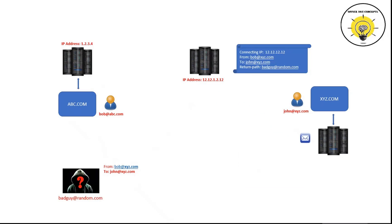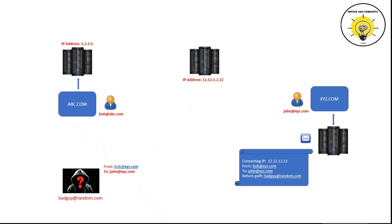When the recipient server receives this email, it will try to validate if this particular email is legitimate or not. But how will the recipient server know if the connecting IP address 12.12.12.12 belongs to abc.com organization, or verify if this email was actually sent from bob@abc.com? Let's now understand how SPF record helps recipient servers identify whether an email is legitimate or sent by someone who does not belong to that particular domain.